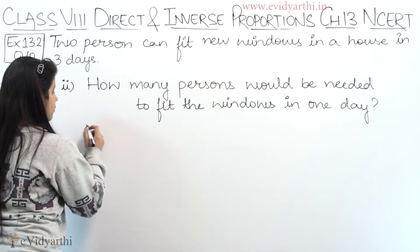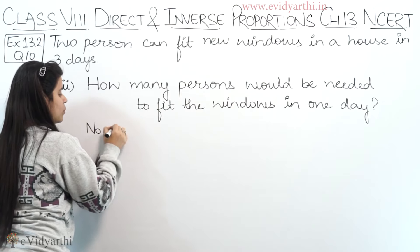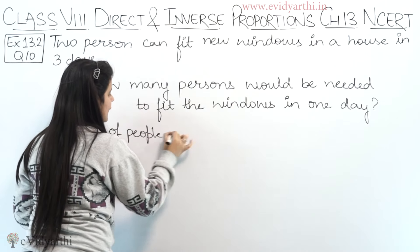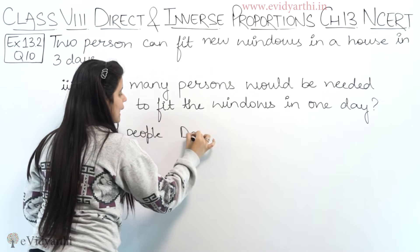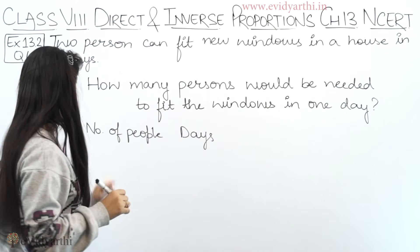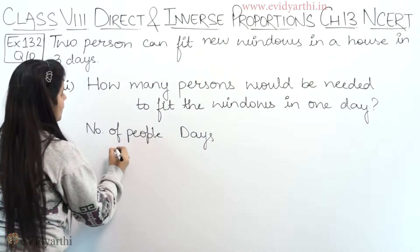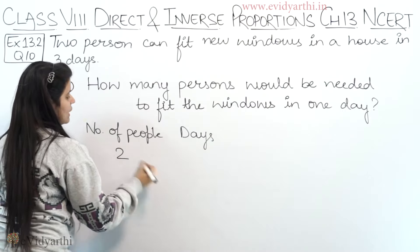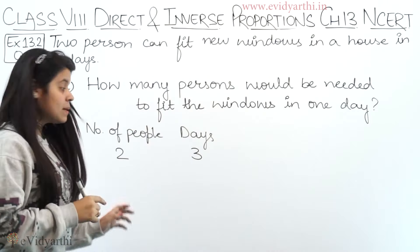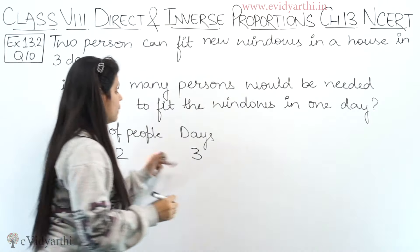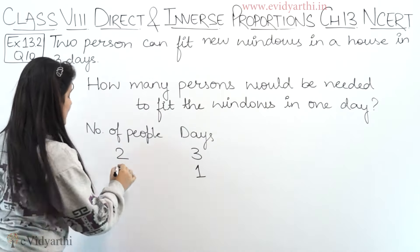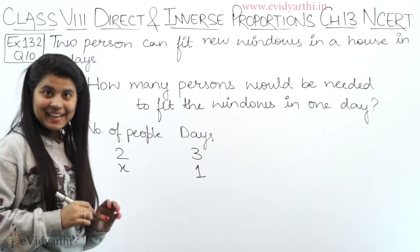Again we have two things: one is the number of people appointed to work, and the other is the number of days. What was the first given? That if two people work, then it takes three days. Now if we have to finish in one day, how many people will we need?